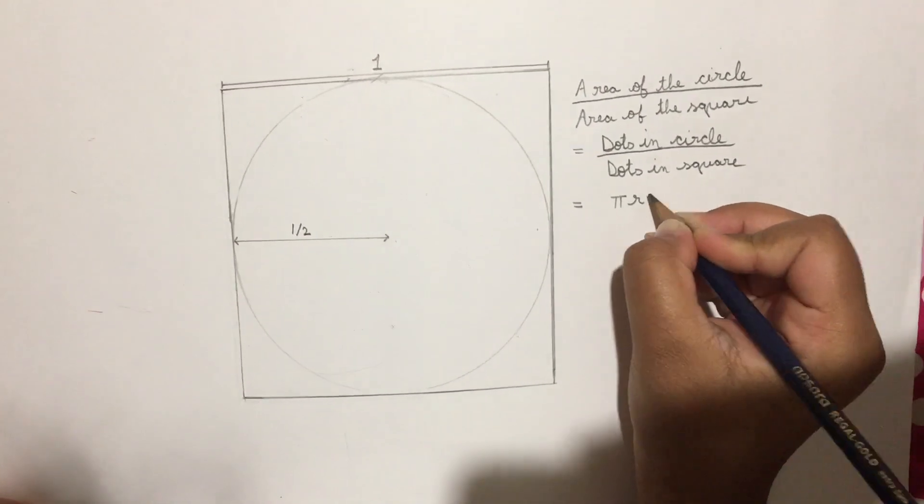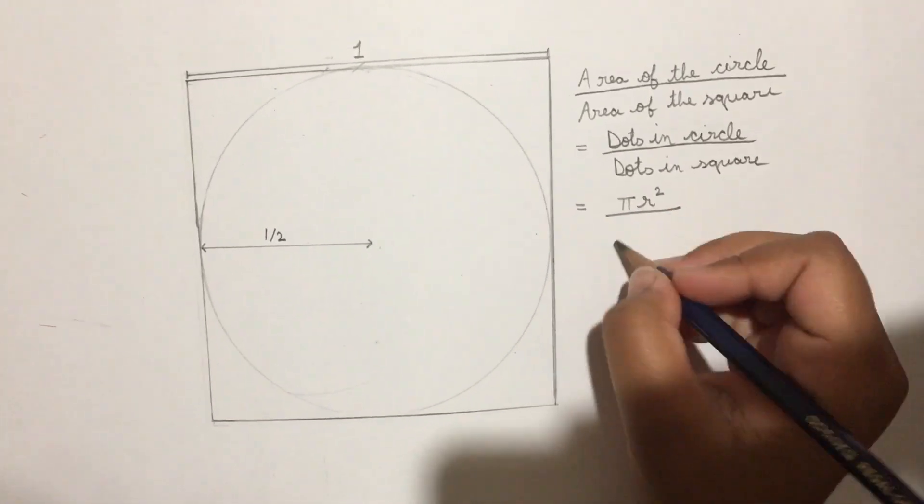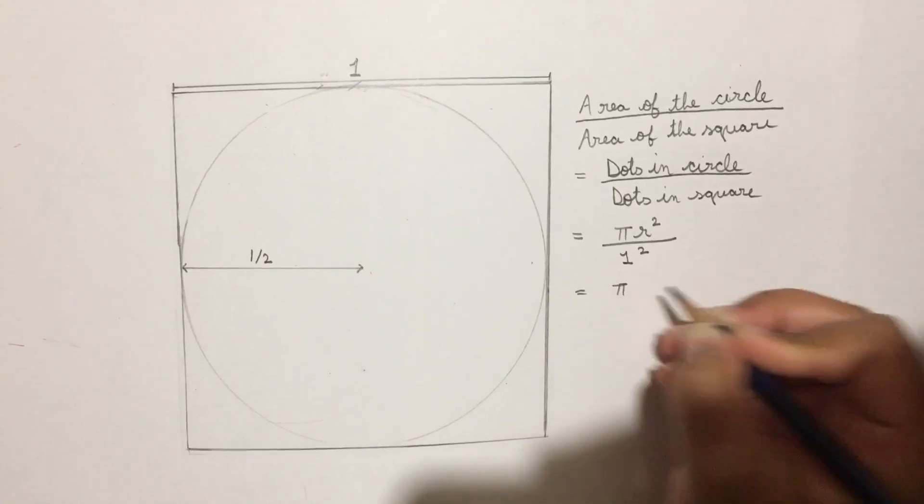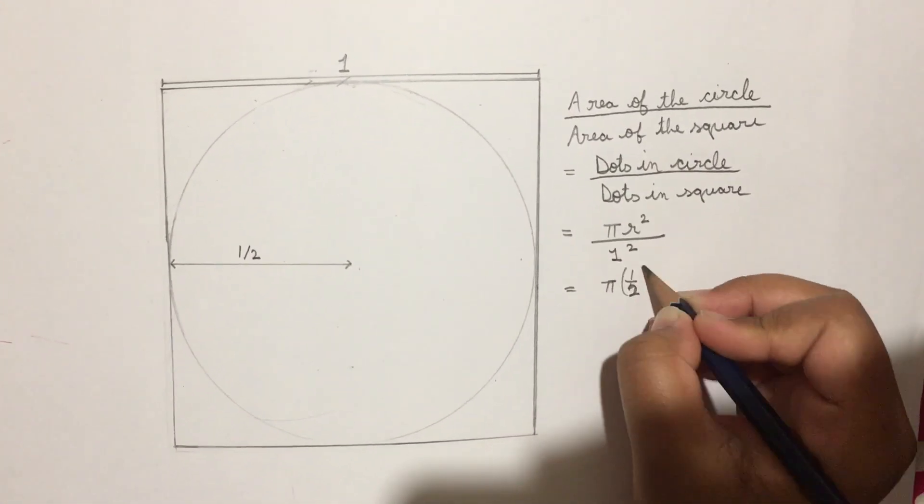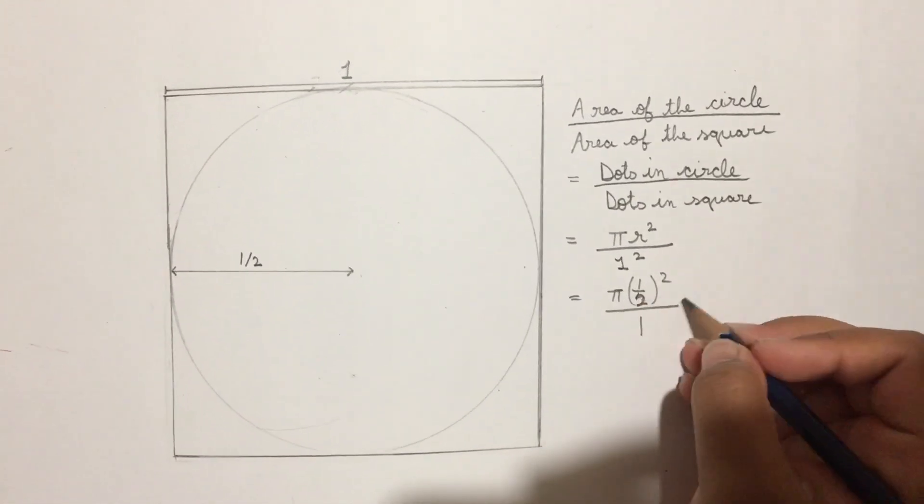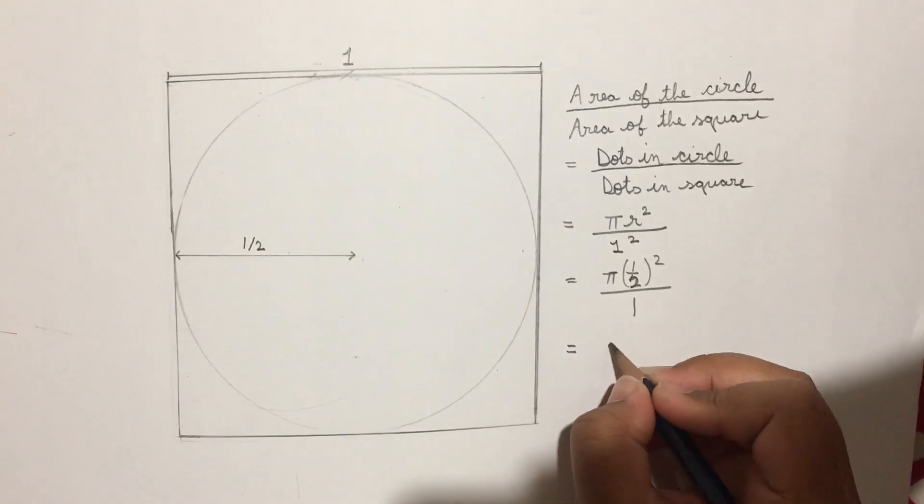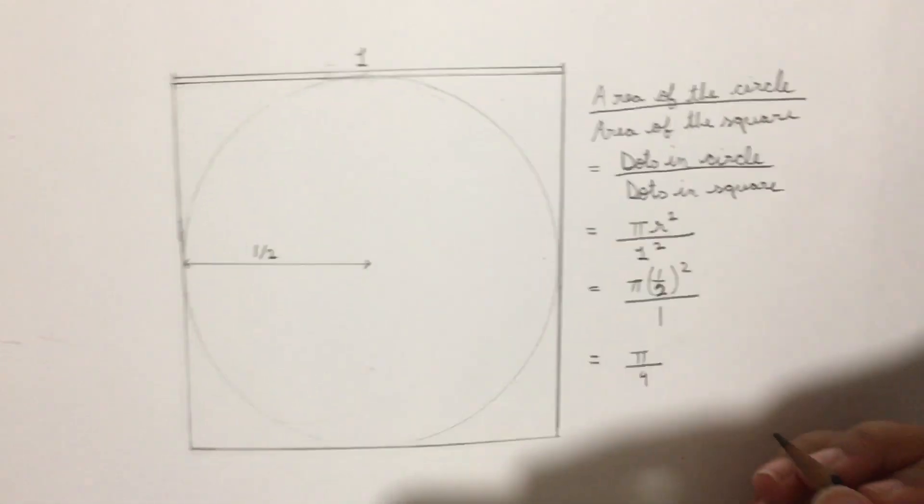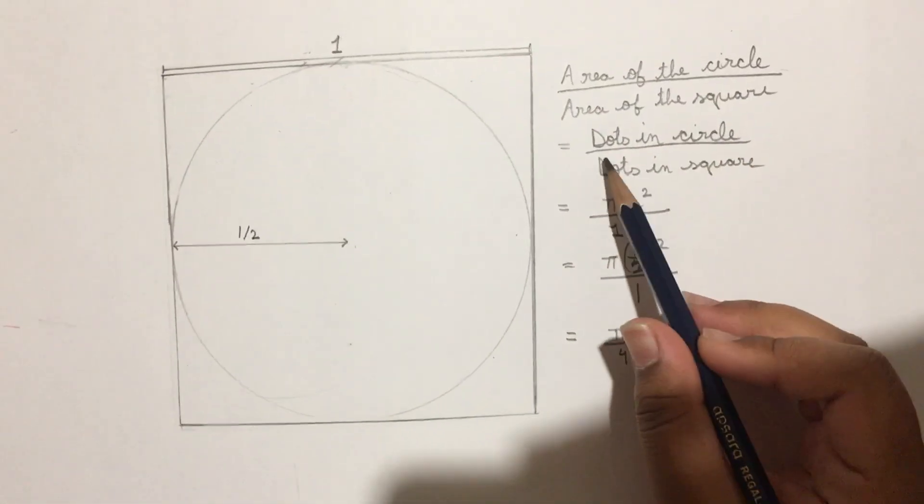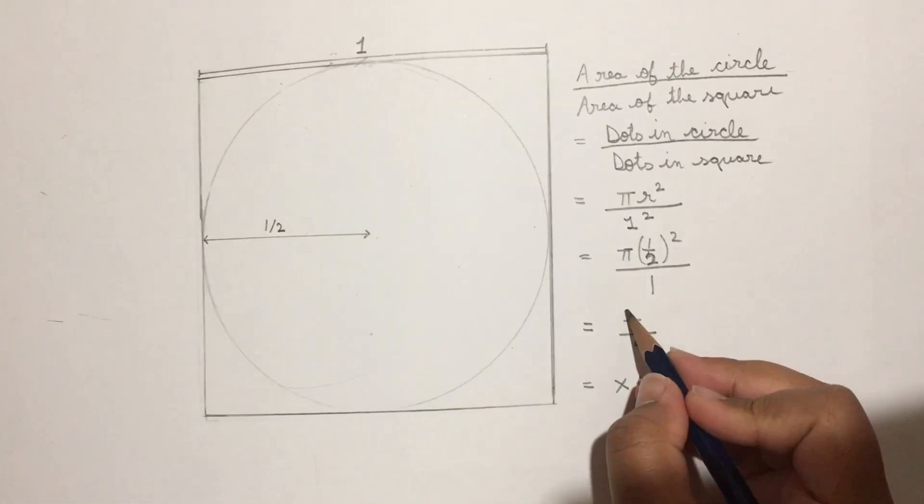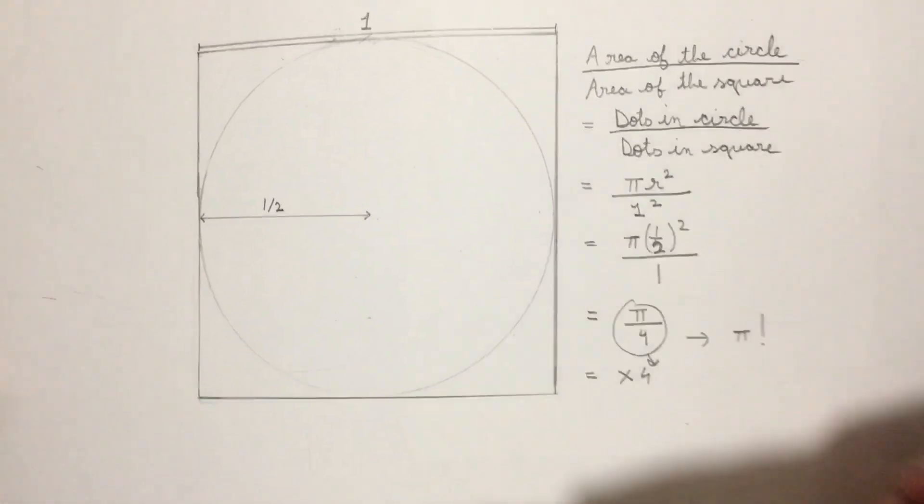The area of the circle, which is πr², divided by the area of the square, which is side length² (which is 1²), should equal π(1/2)². Anything divided by 1 equals itself, so this equals π times (1/2)², which is 1/4, so this becomes π/4. If we do the dots in the circle divided by the dots in the square, we get π/4, and if we times that by 4, we get π.